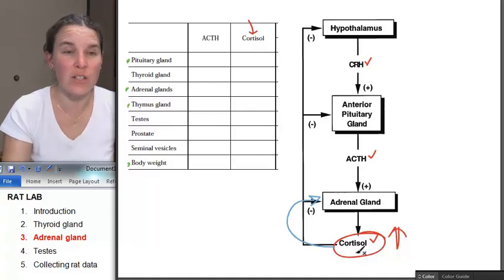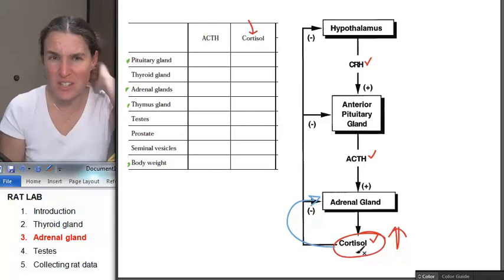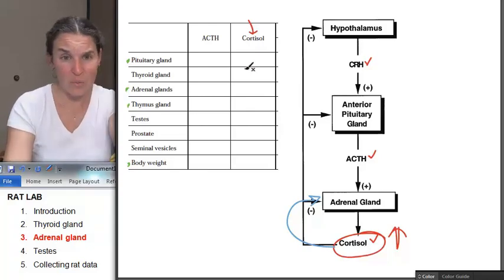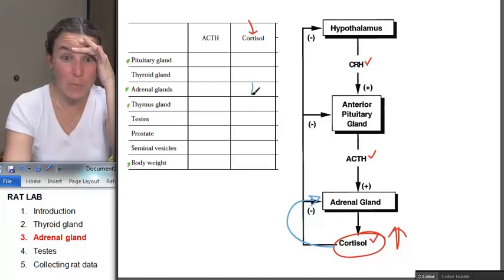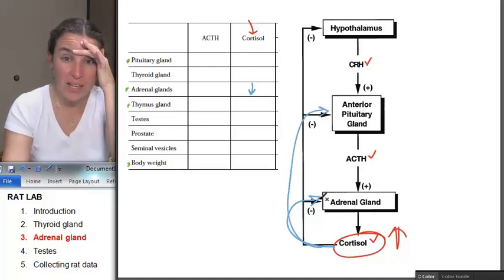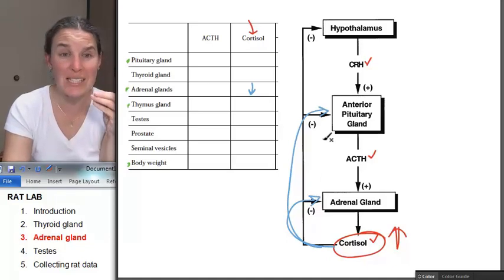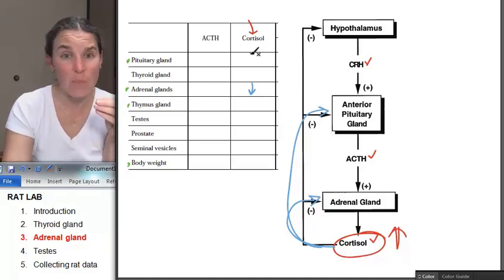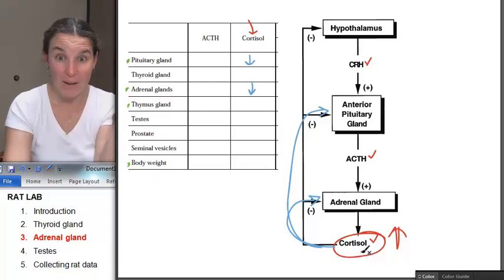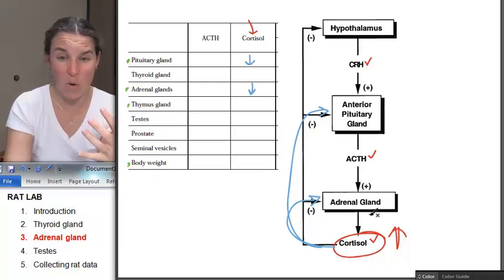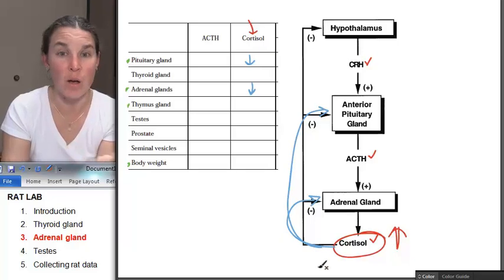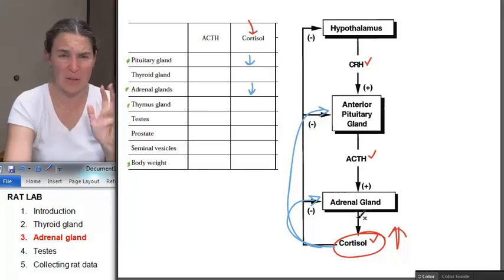Negative feedback. That cortisol that you just dumped in is going to tell the adrenal gland, dude, please, we don't need you. Get smaller because there's massive amounts of cortisol. What is going to happen to Aunt Pitt? It's bad. It's all bad. We need you to get smaller, Aunt Pitty, because this is just crazy talk, right? Negative. We don't need any more. We keep adding more cortisol, but it keeps telling these guys, don't do any more, please.